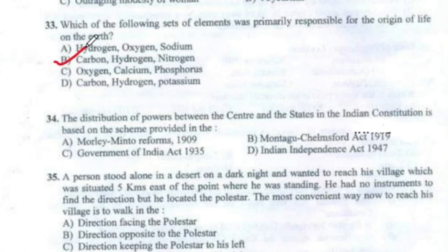Question 34: The distribution of powers between the centre and the states in the Indian Constitution is based on the scheme provided in the Government of India Act 1935. The correct answer is Option C.